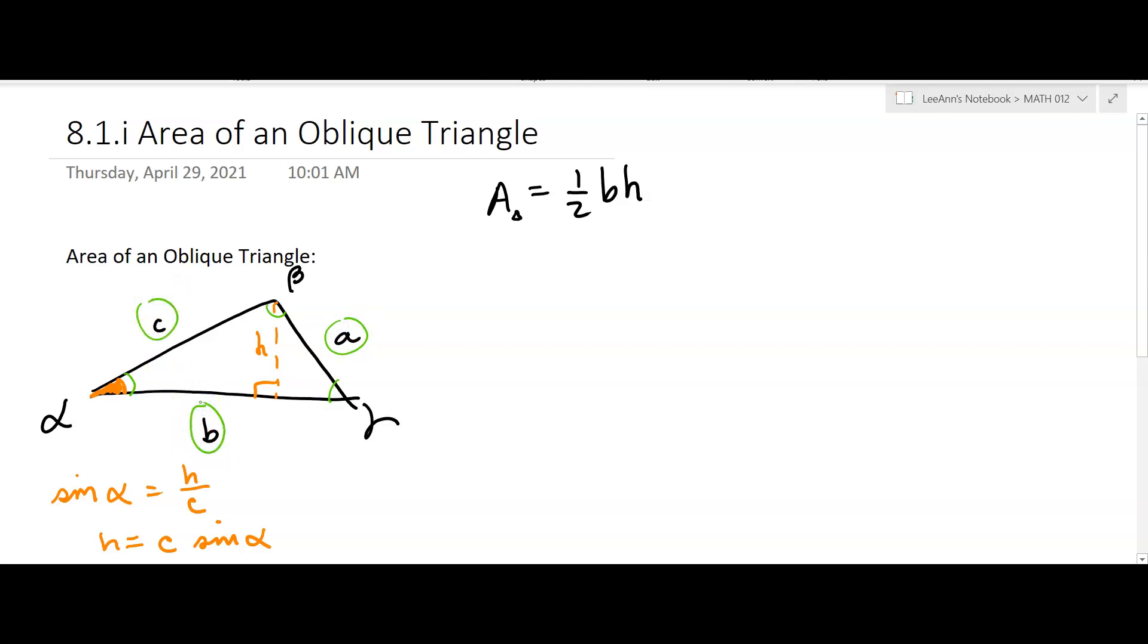To find the area when we don't know the height, our formula becomes: the area of the triangle equals one-half B, some side at the base—for our example we're using this as the base—times H. But H, we have that as C sine alpha, and so that becomes